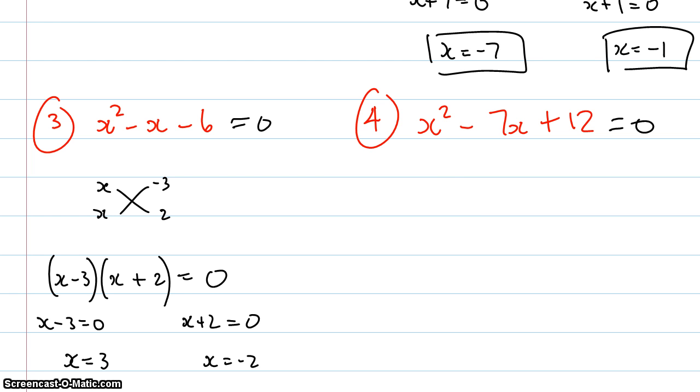Okay I'll move on to this one. x, x, negative 3 and negative 4. So I'm going to get x minus 3, x minus 4, equals 0.